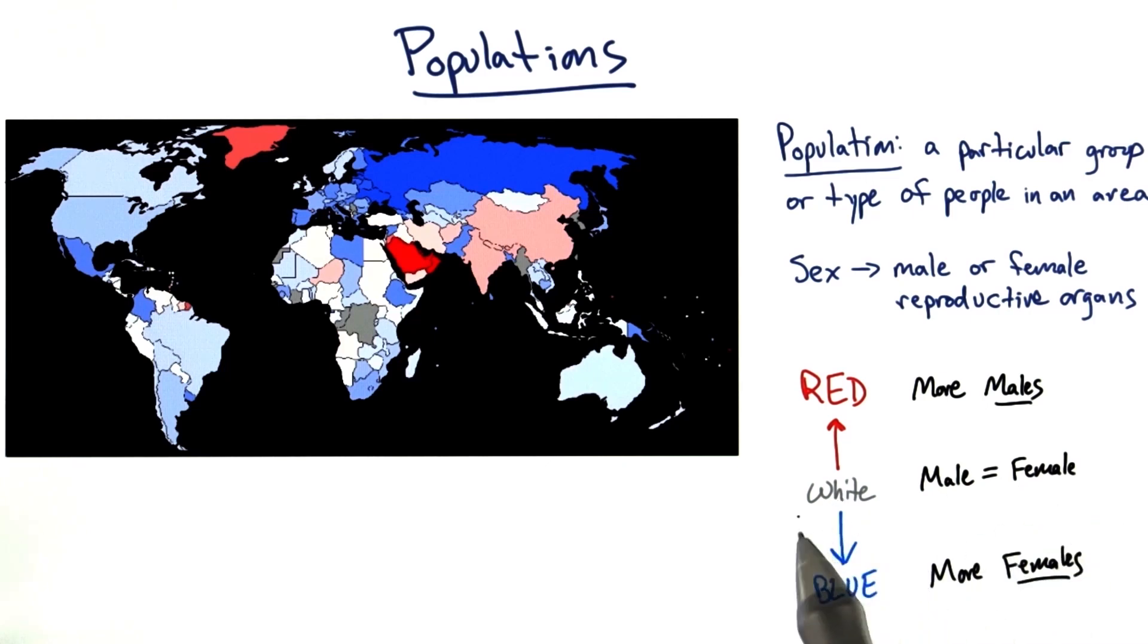The closer it is to a more neutral color, white, so a lighter blue, a lighter red, or a white color, this means that the male and female ratio is roughly equal.